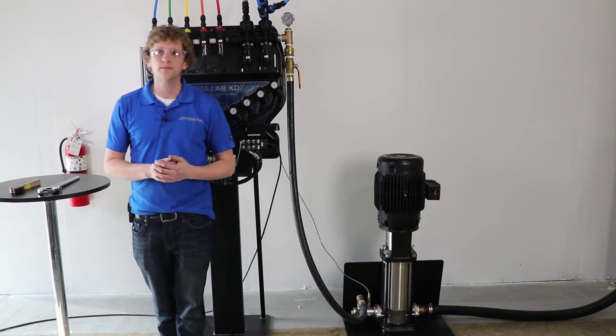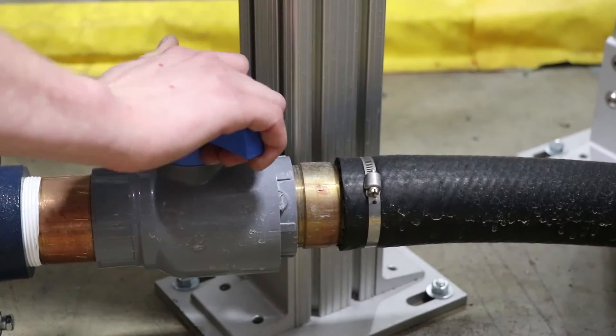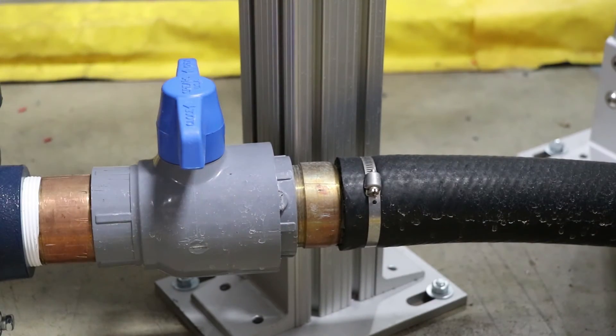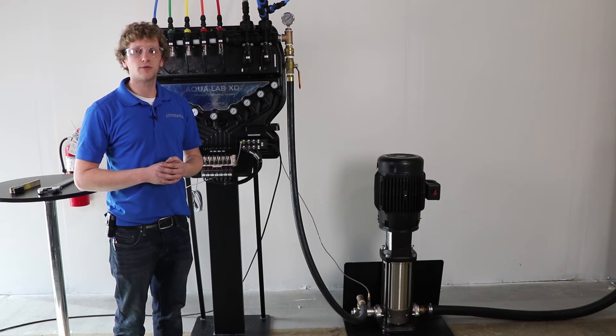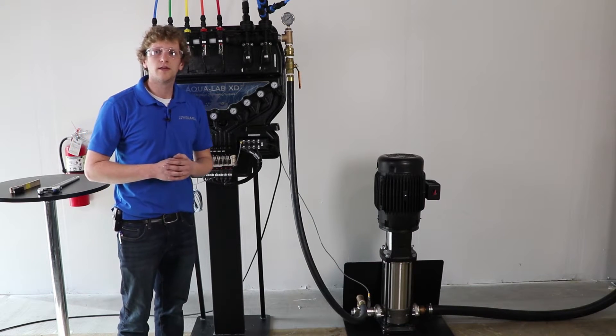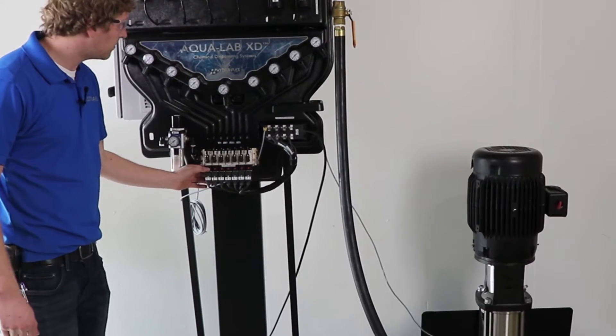The first thing that we need to do is to turn off the inlet water supply to the pump. Once the water supply is turned off you will need to bleed any residual pressure. To do this you can manually open any valve by pressing the red button on the AcoLab panel.